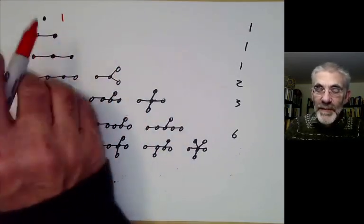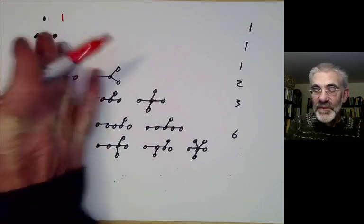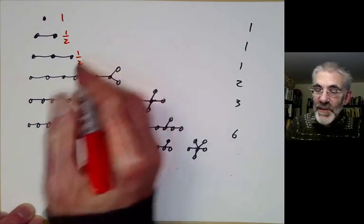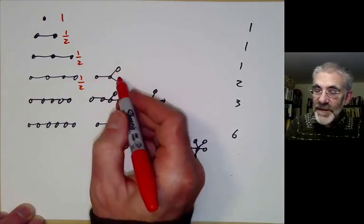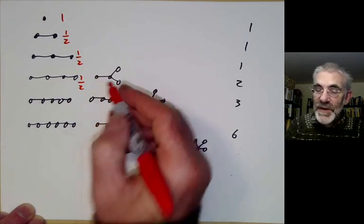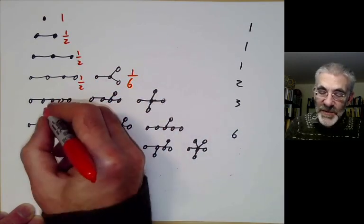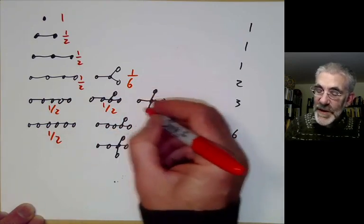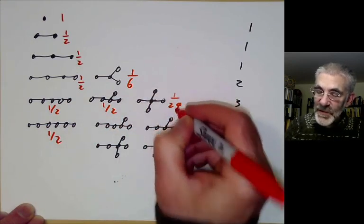This one has one symmetry, so we count it as one tree. But this one has two symmetries because we can swap the two ends, so we count it as half a tree. Similarly, that's half a tree, that's half a tree. This one has six symmetries because we can permute these three points, so it's one-sixth of a tree. Then we get a half, a half, a half, and here we have 24 symmetries, giving one over 24.